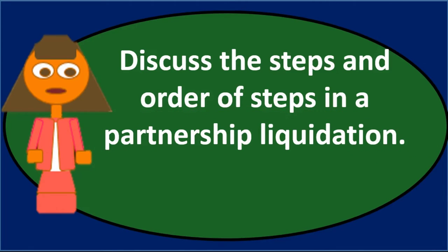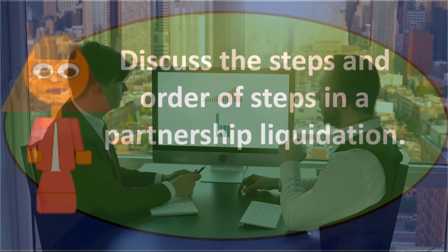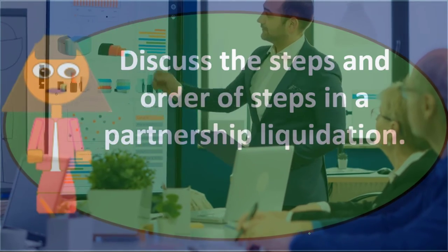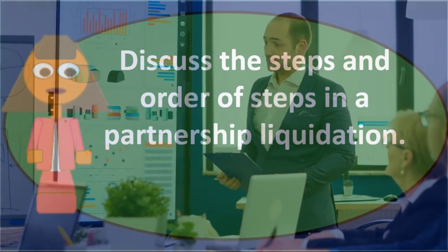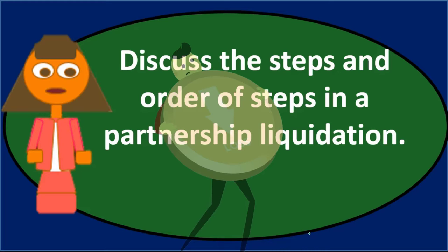If we go through the liquidation process, there are really a few steps. First, we want to sell all of the assets. Then we want to allocate any gains or losses on those sales to the proper capital accounts in accordance with the partners' profit sharing agreements.